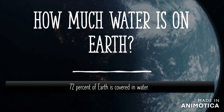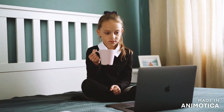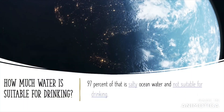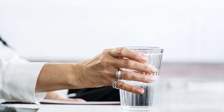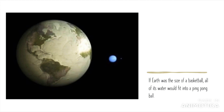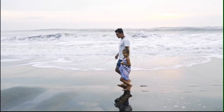How much water is on Earth? It covers almost 75 percent of Earth's surface in the form of oceans, rivers, and lakes. How much water is suitable for drinking? Ninety-seven percent of that water is salty ocean water, which is not suitable for drinking. So we have only three percent of water which is suitable for drinking. If we compare the Earth to a basketball, all of its water will fit into a ping-pong ball — isn't that amazing?